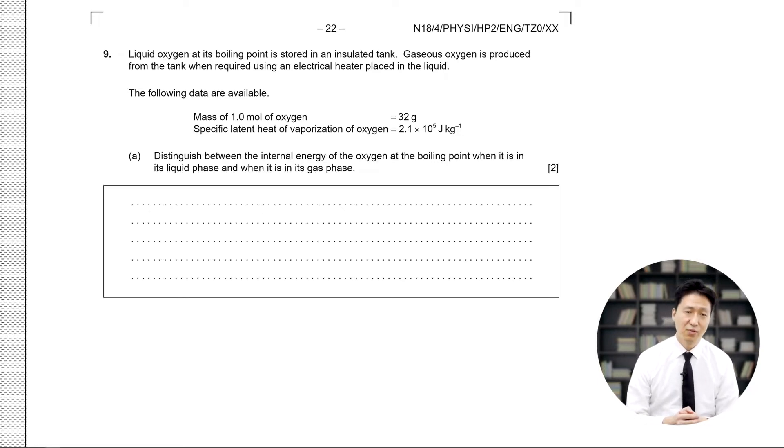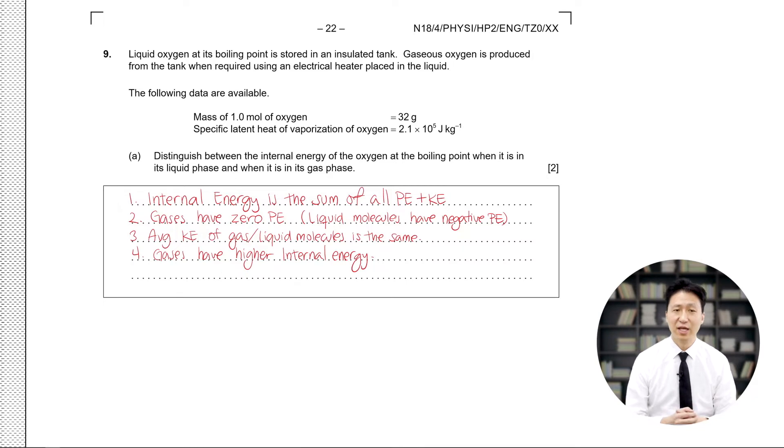Part 1 asks us to distinguish the internal energy of the oxygen at the boiling point when it is in liquid phase and when it is in gas phase. This question is only worth two points, so you can have a short answer. First, you have to mention that the internal energy is the sum of all potential and kinetic energies. Second, gases have zero potential energies because they have zero intermolecular forces in ideal gases. Liquid molecules do not have this restriction. They will have intermolecular forces and therefore will have a potential energy that is of course negative.